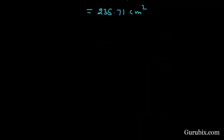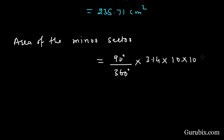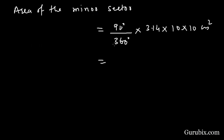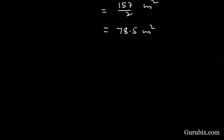Now we shall find the area of the minor sector. It will be 90 degrees over 360 degrees times 3.14 times 10 times 10 centimeters squared. This equals 314 over 4, or 157 over 2 centimeters squared, which equals 78.5 centimeters squared.